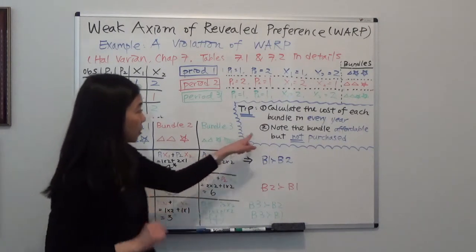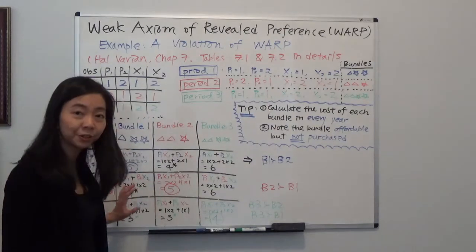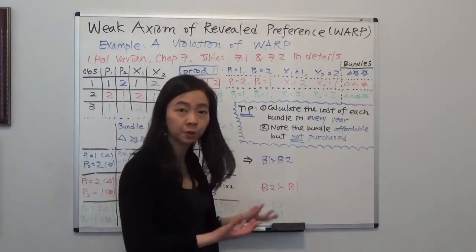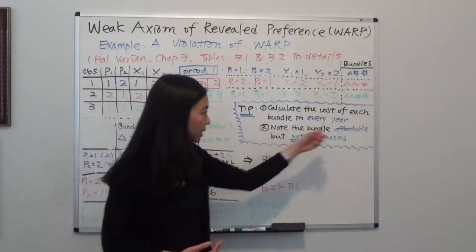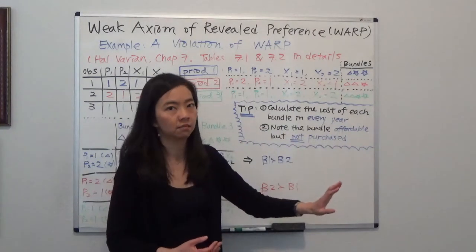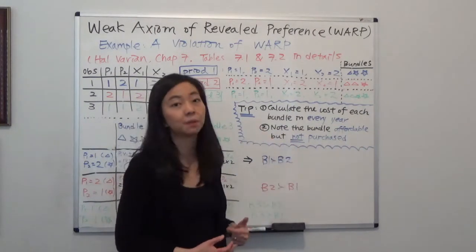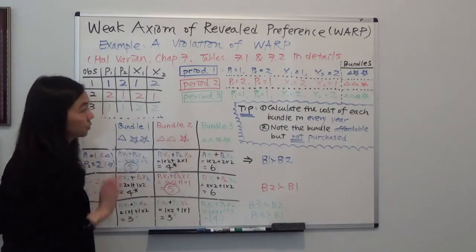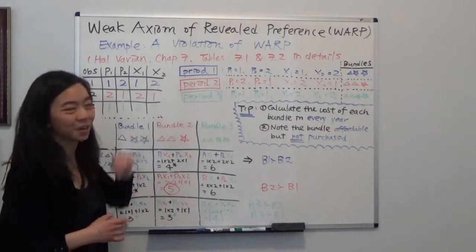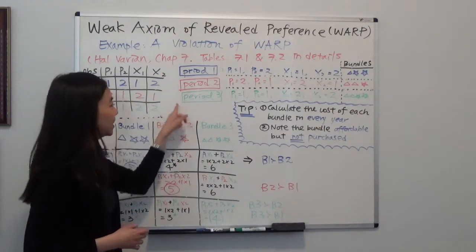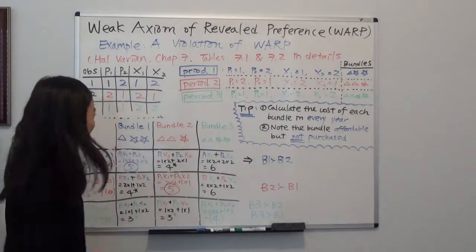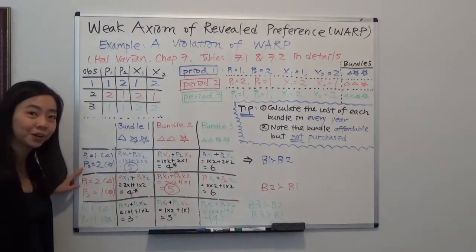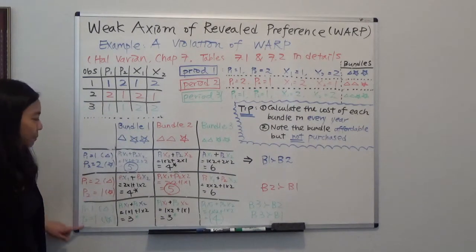After we calculate the cost of all bundles in all years, we're going to note those bundles that were affordable but were not purchased. If something is affordable and you didn't purchase it, that means you don't like it — that's why you didn't buy it. I have a color code: year 1 is blue, year 2 is red, and year 3 is green. So you can see the bundle in year 1, bundle in year 2, bundle in year 3, and the corresponding prices.